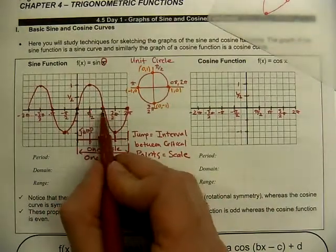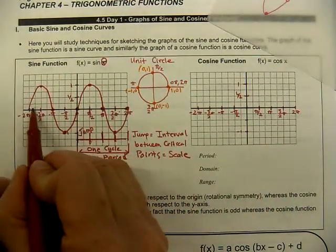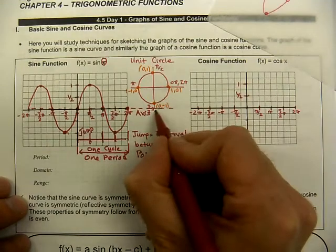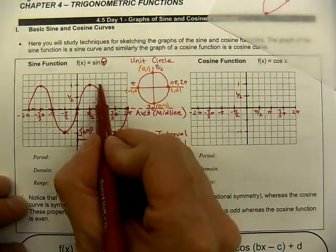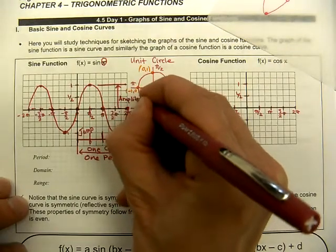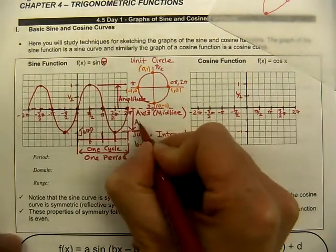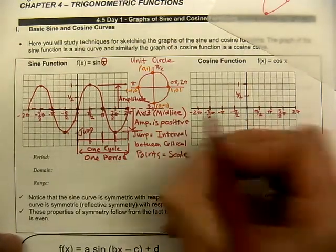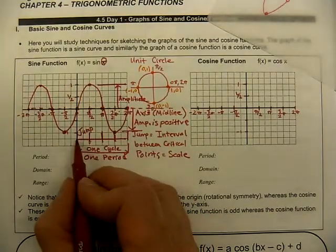When we calculate the jump or interval, it tells us what scale to use on the graph. The horizontal line running through the center, halfway between the top and the bottom, is called the axis or midline. The distance from the midline to the maximum point is the amplitude — created by a vertical stretch or shrink. The distance down to the minimum is also the amplitude, and the amplitude is always positive because it describes a distance.